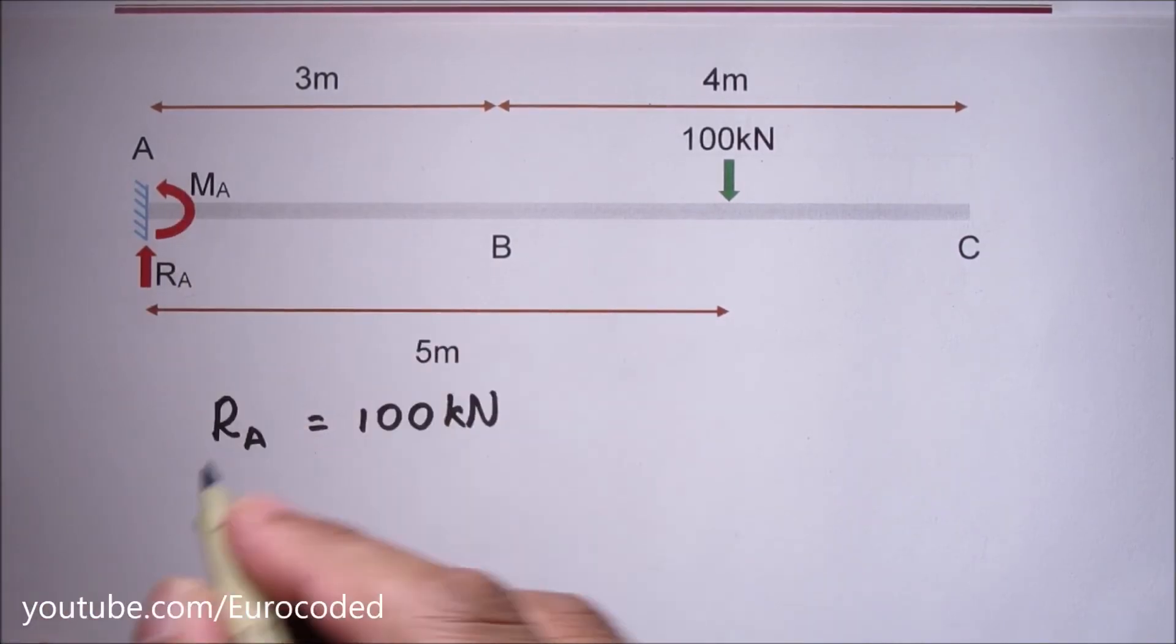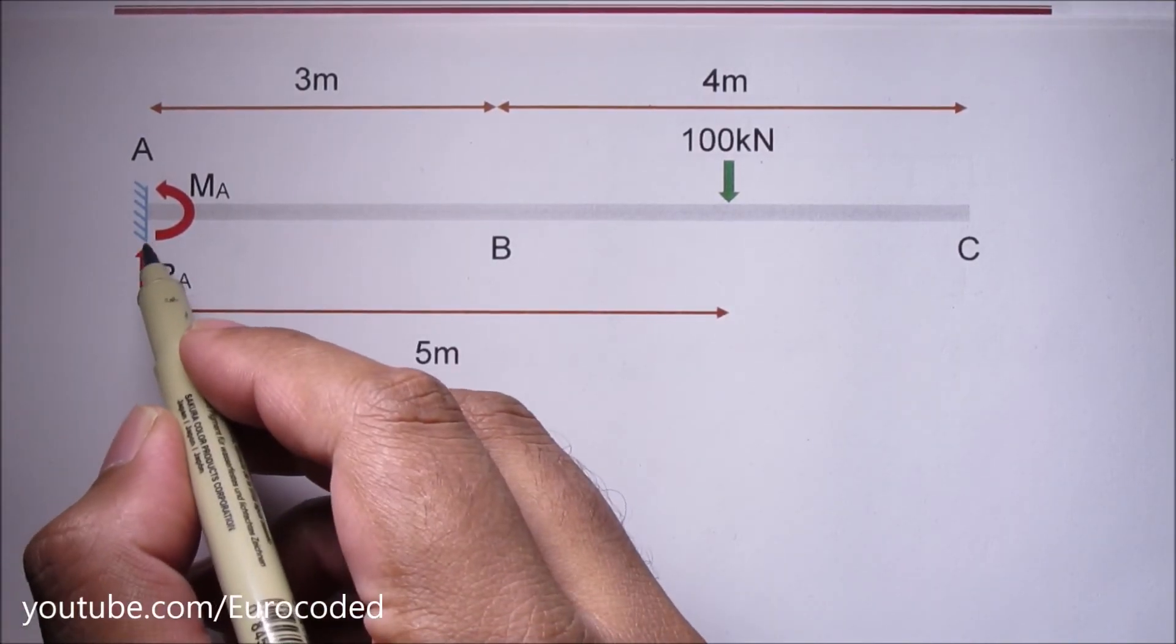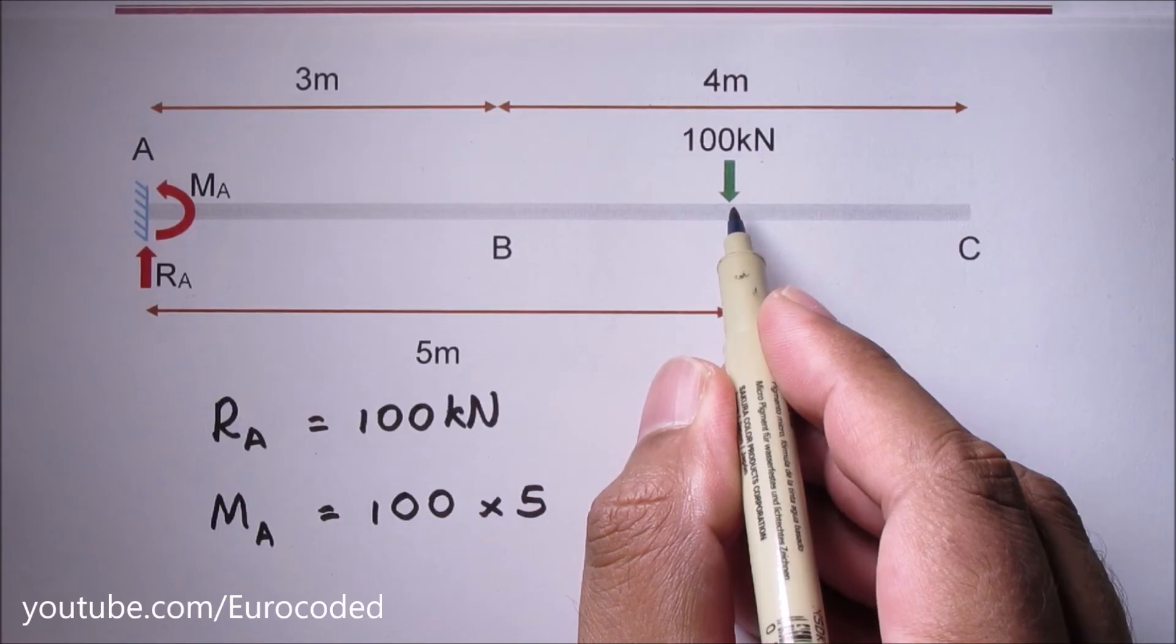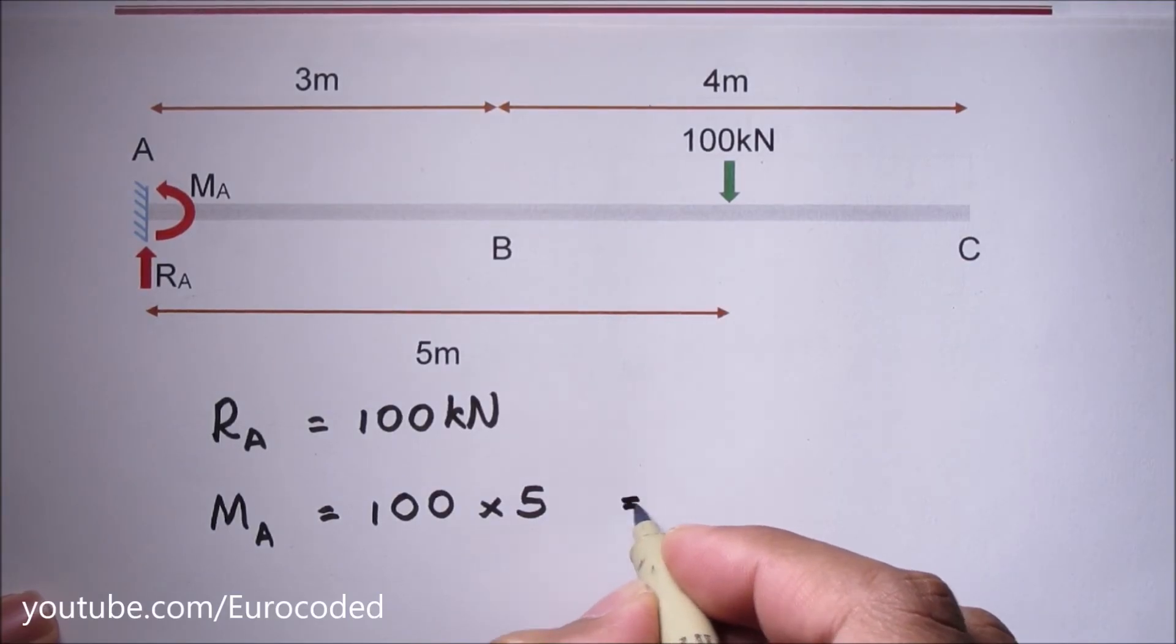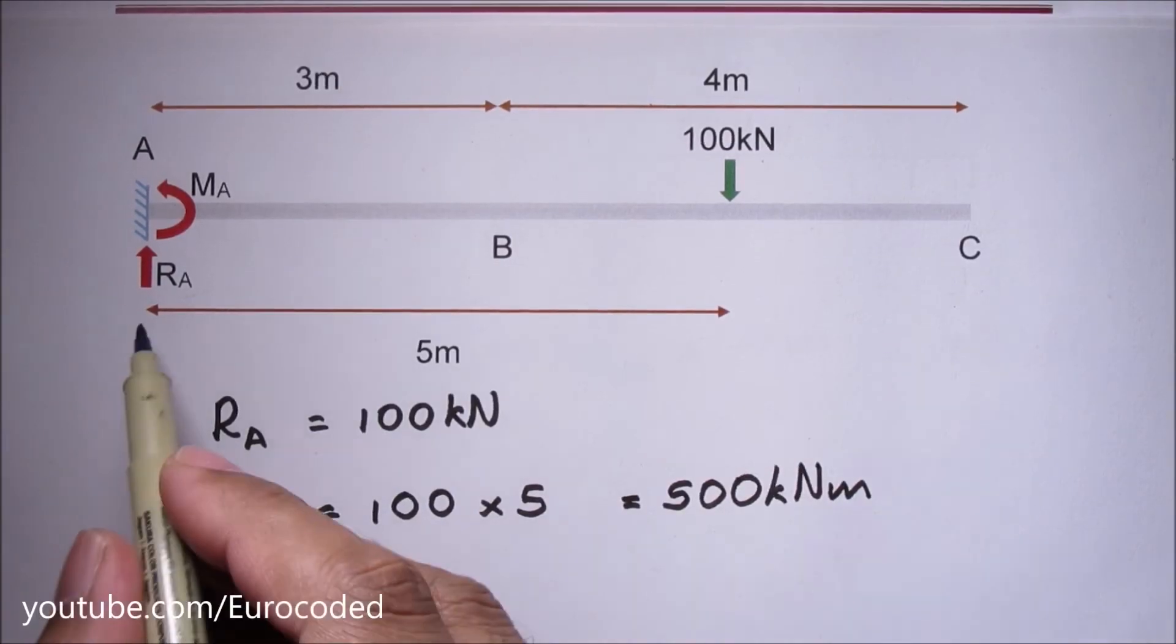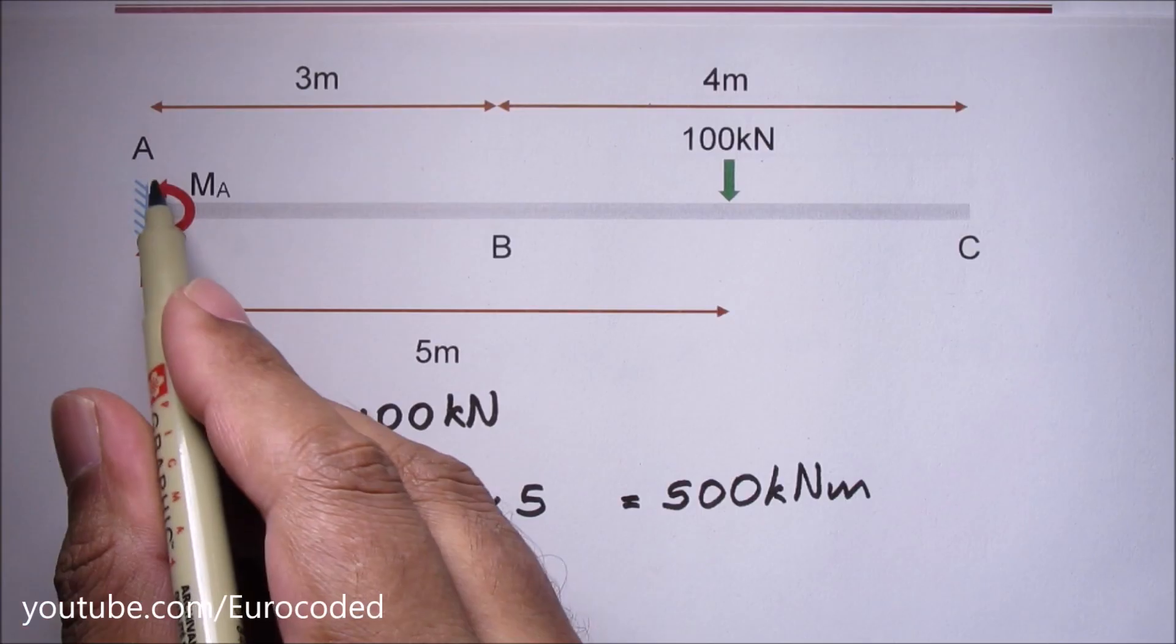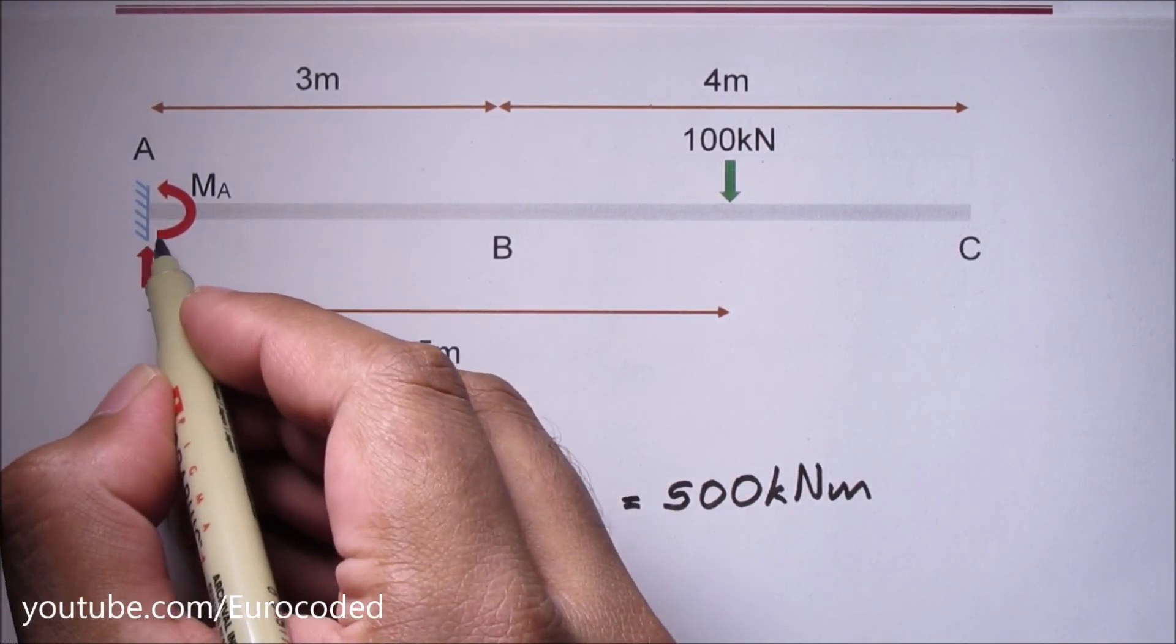We can write MA is equal to MA which is an anti-clockwise moment and this force of 100 kN acting on the beam is causing a clockwise moment and the lever arm is 5 meters. Therefore MA is equal to 500 kNm. So the reactions at the fixed support are 100 kN vertical reaction which is RA and MA which is equal to 500 kNm anti-clockwise bending moment.